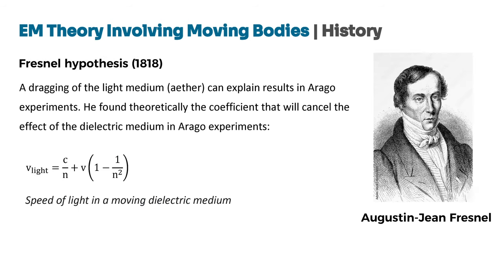In 1818, Augustine Jean Fresnel proposed the concept of ether drag to explain Arago's results. Fresnel theorized that the light medium, ether, is partially dragged by a moving dielectric medium, such as a prism. He derived a theoretical coefficient that would cancel out the effect that Arago was trying to measure. This coefficient, known as the Fresnel-drag coefficient, is given by the formula shown in the slide.